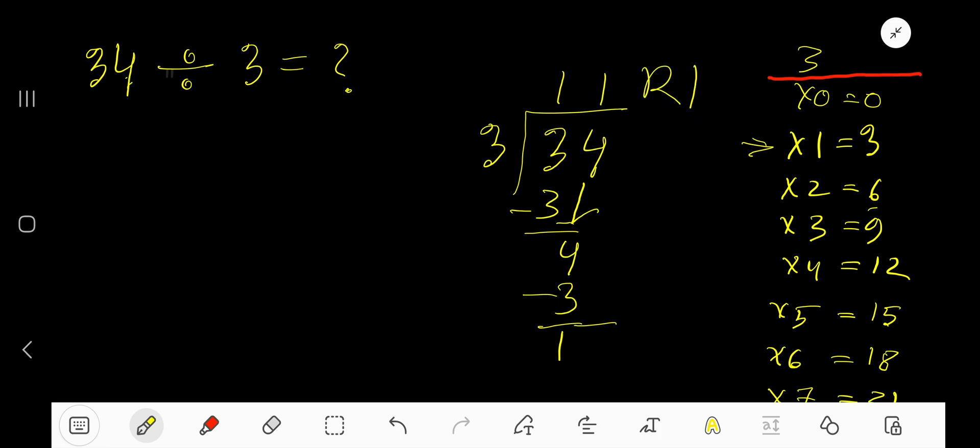But if you want to write your answer in decimal form, place a decimal here and add zeros. Bring down the first zero. Before the zero, the decimal must come to the quotient directly. So, 3 goes into 10 how many times?